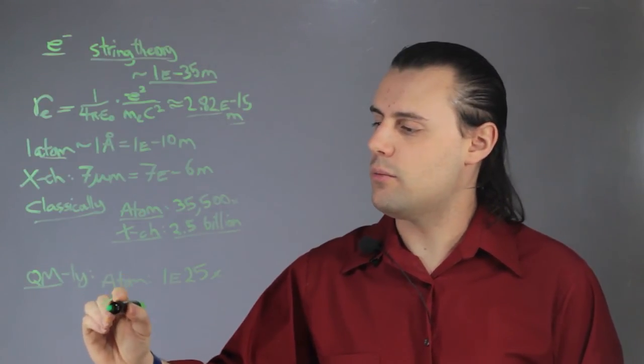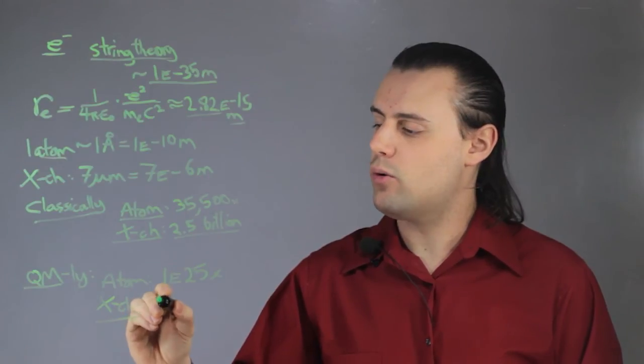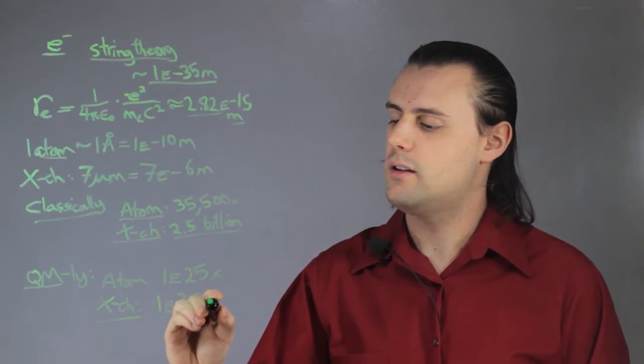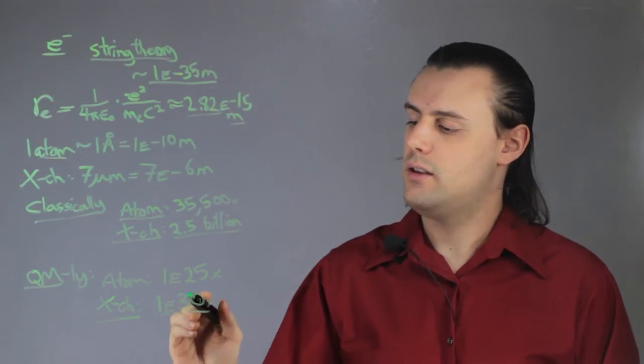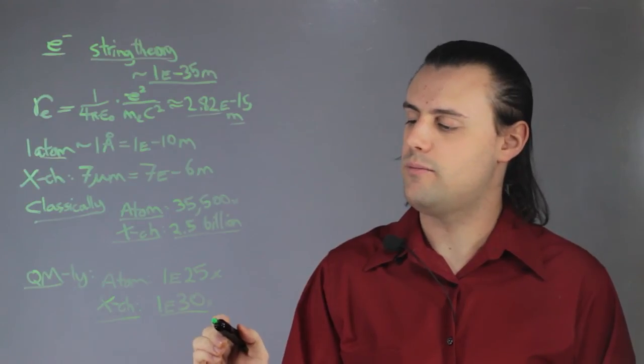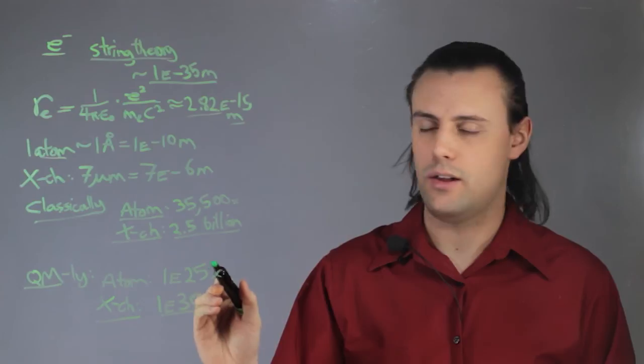And an X chromosome would be on the order of 1 times 10 to the 30 times larger than an electron. So that's a 1 with 30 zeros trailing after it, five orders of magnitude larger than an atom.